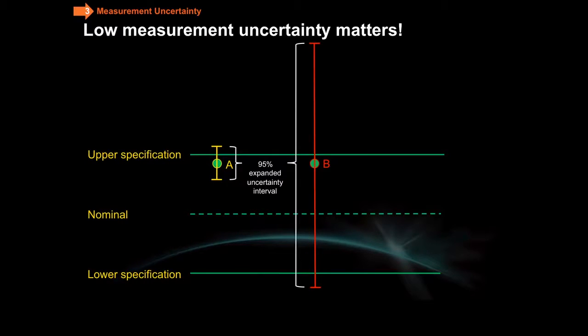That's a really important term because what it says is we don't really know the true measurement of either A or B. But what we do know is that there's a 95% coverage interval where the true result could be between the yellow marks or between the two red marks.